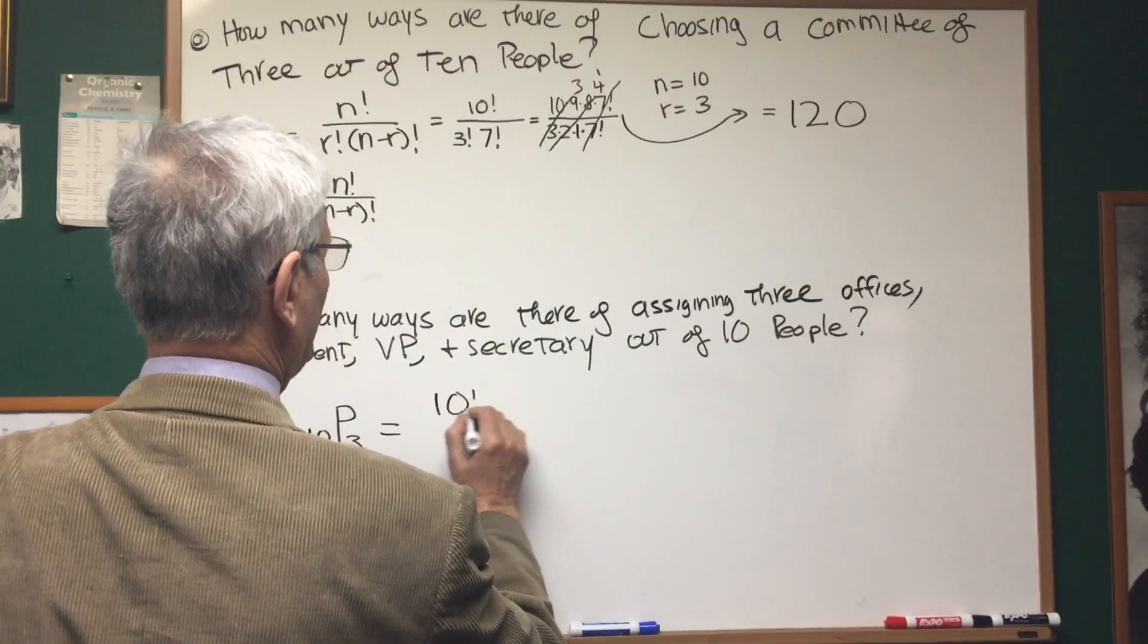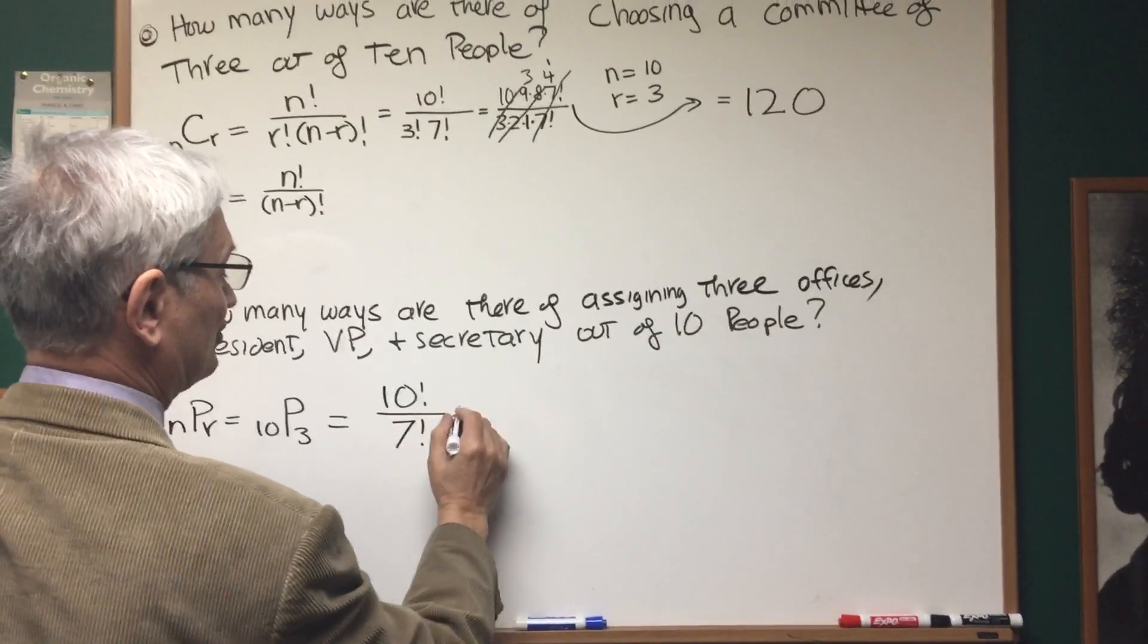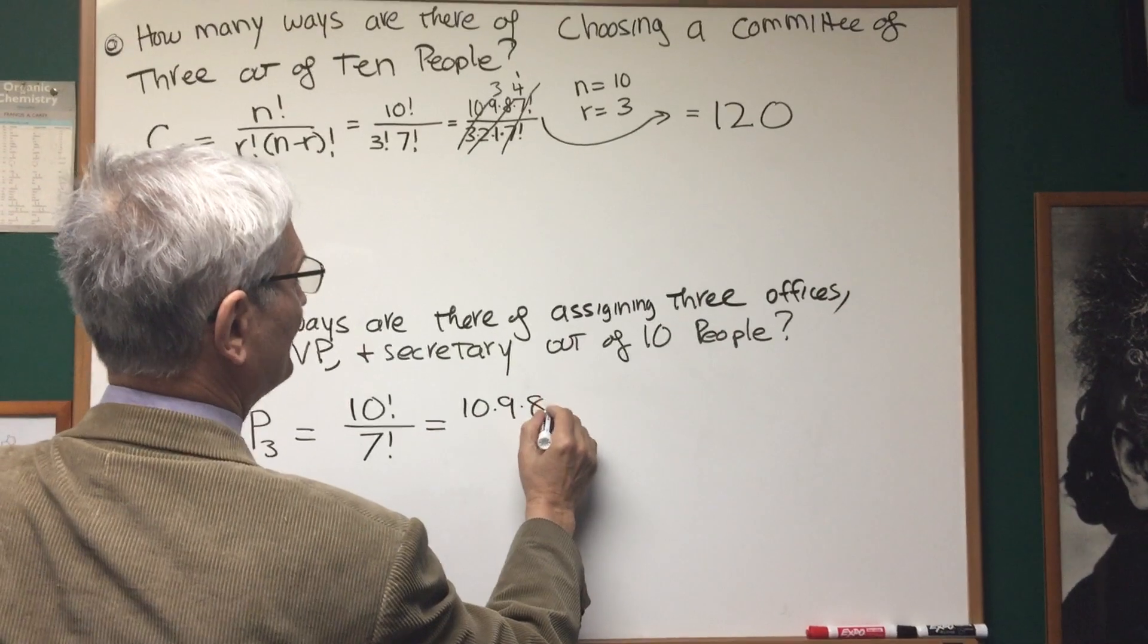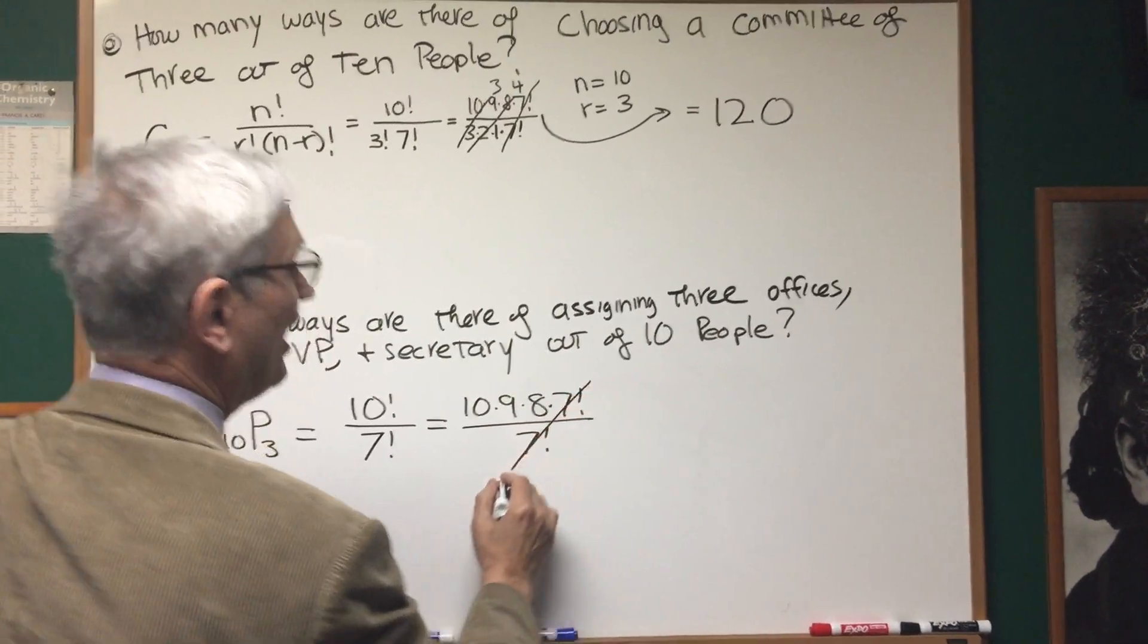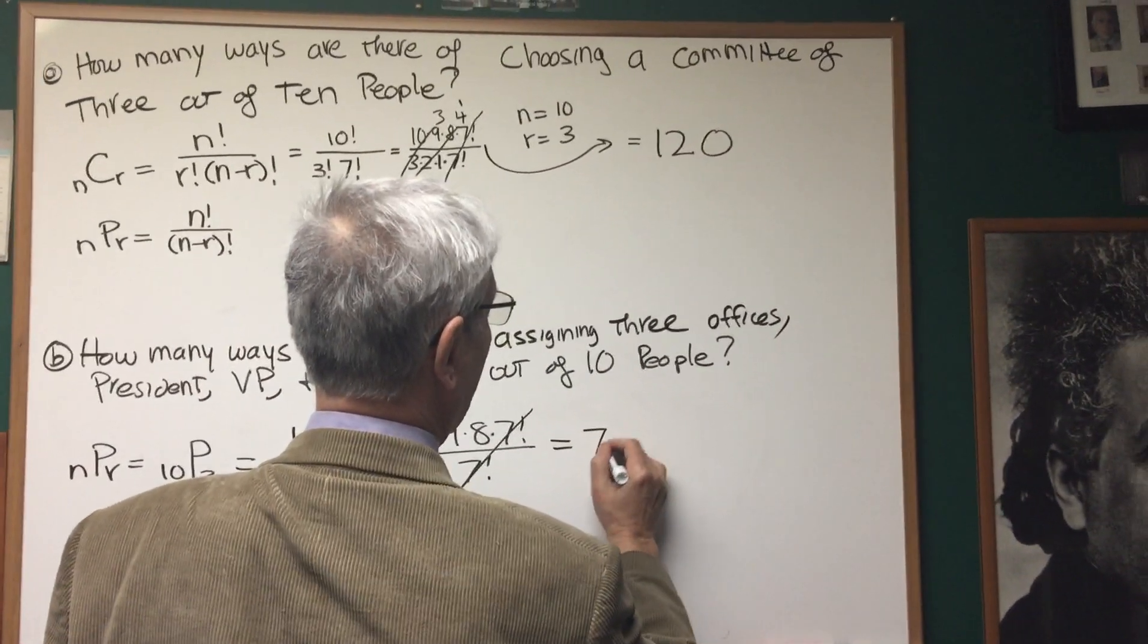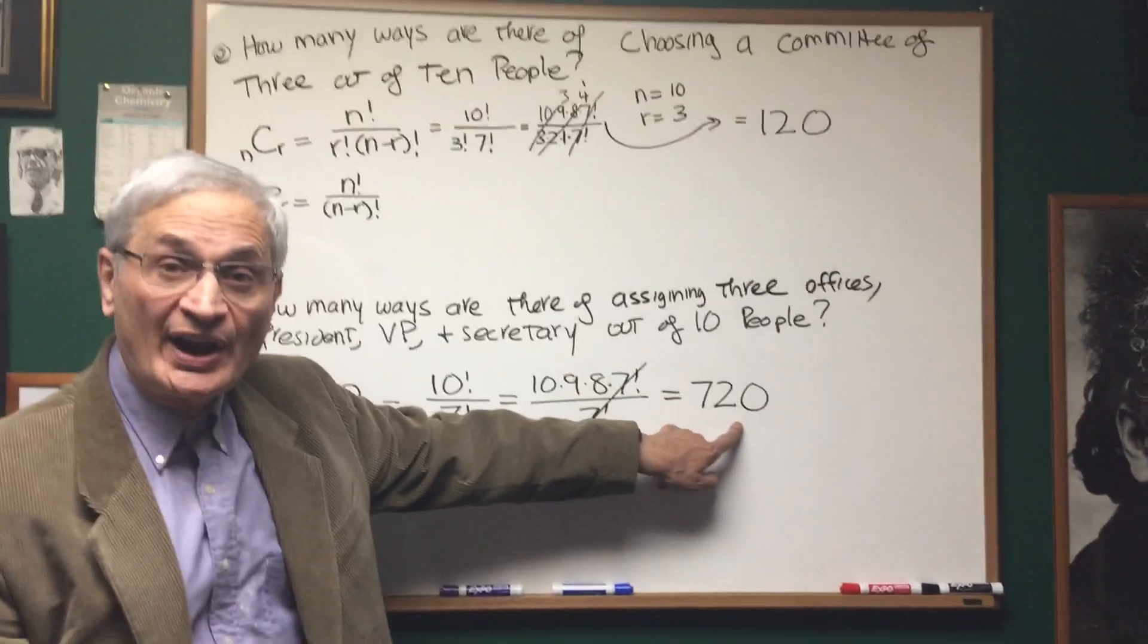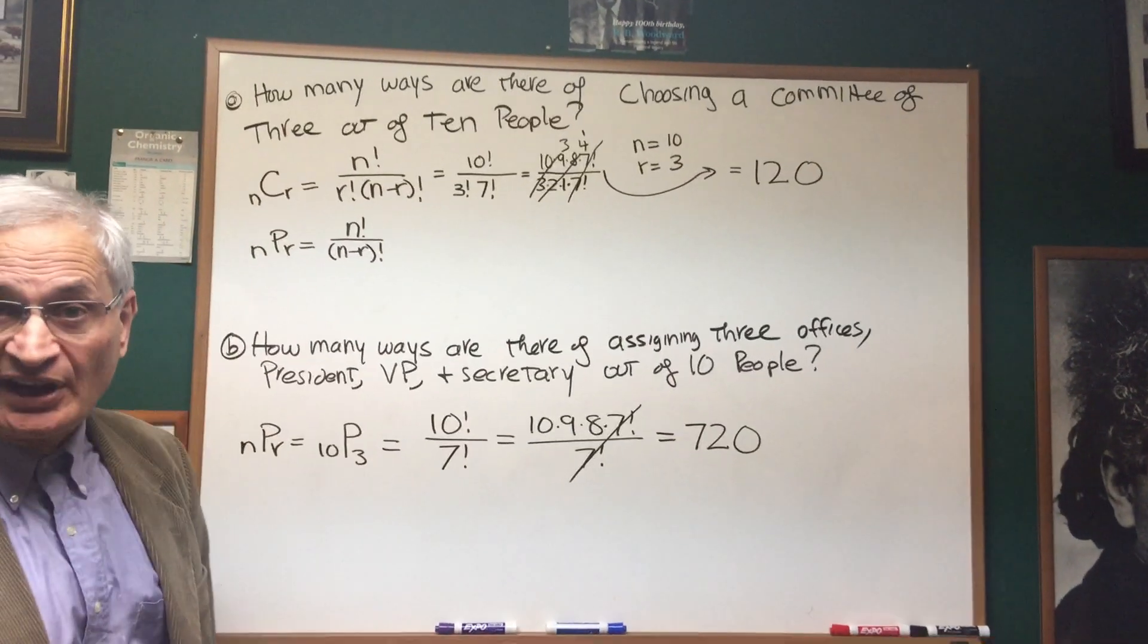So this is going to be ten factorial over ten minus three factorial, or seven factorial. And the result is ten times nine times eight times seven factorial over seven factorial. The seven factorials cancel. Nine times eight is seventy-two. Seventy-two times ten is seven hundred and twenty. So notice when order counts, there's far more ways of making that selection than there is when order doesn't count.